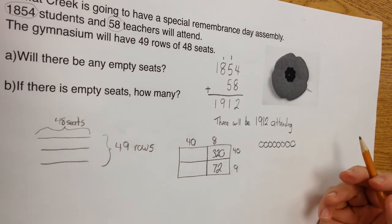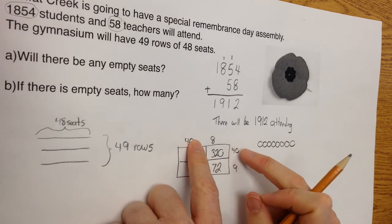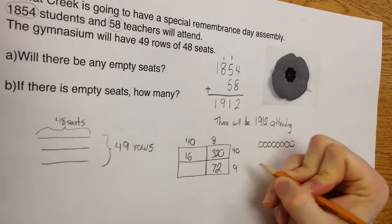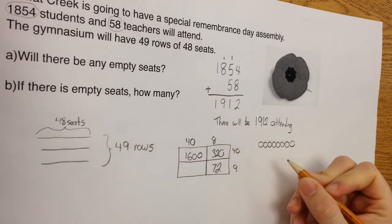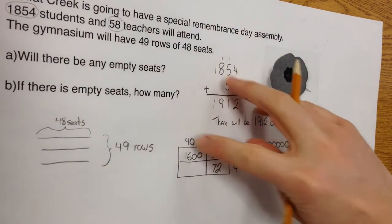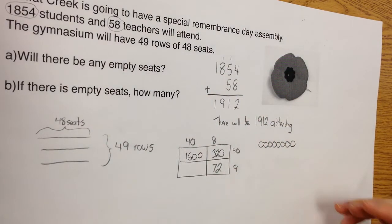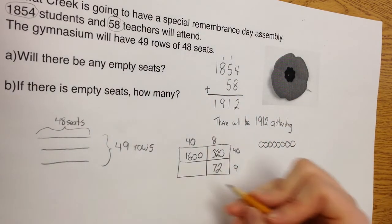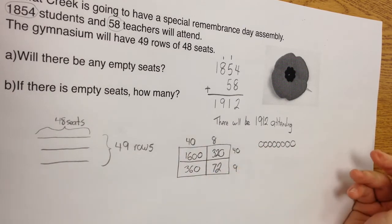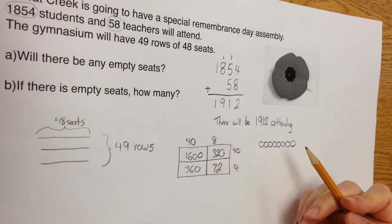Moving into this column, 40 times 40. Big numbers, but I know how to do that. I cover up the 0s. I do 4 times 4. 4 times 4 is 16. And I bring in my 2 0s. And last, I do 4 times 9. Because if I cover up that 0, 4 times 9, I know that 4 times 9 is 36. And now I have a 0. So I have all the numbers in my box.